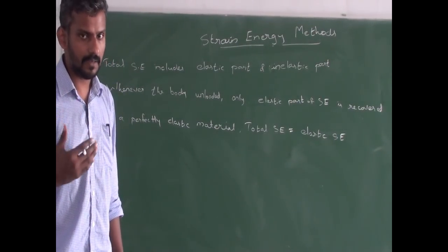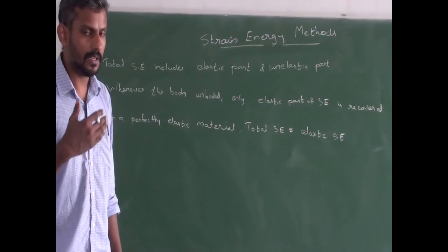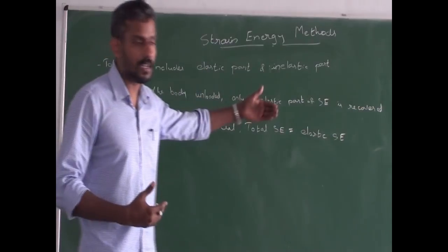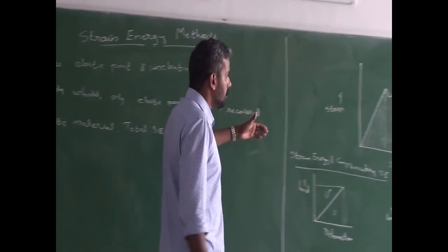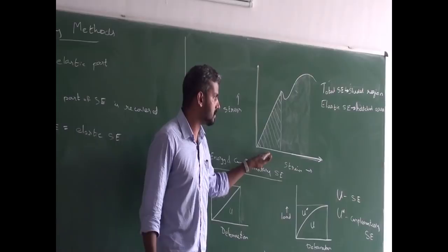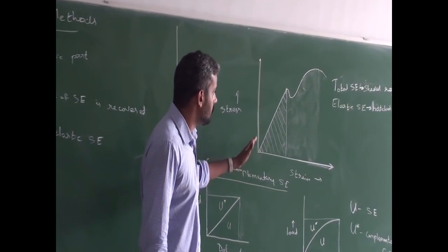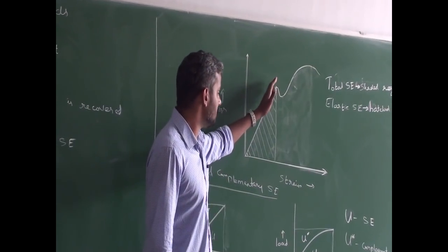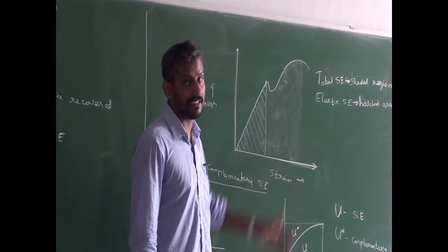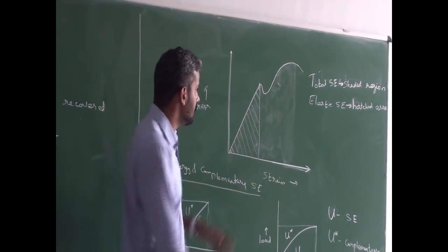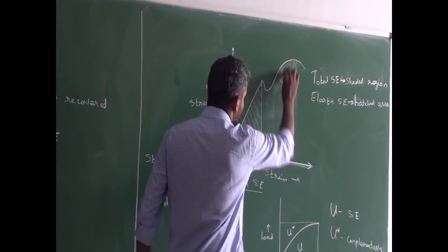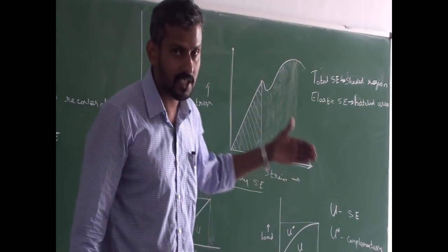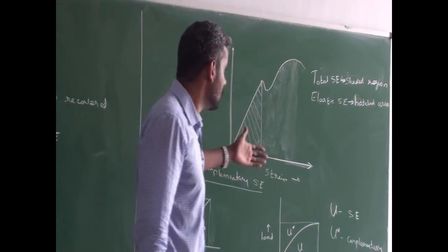For a perfectly elastic material, the total strain energy and elastic strain energy are equal. On the stress-strain curve for a material, total strain energy is the area under the curve — that is the shaded region in the stress-strain graph.